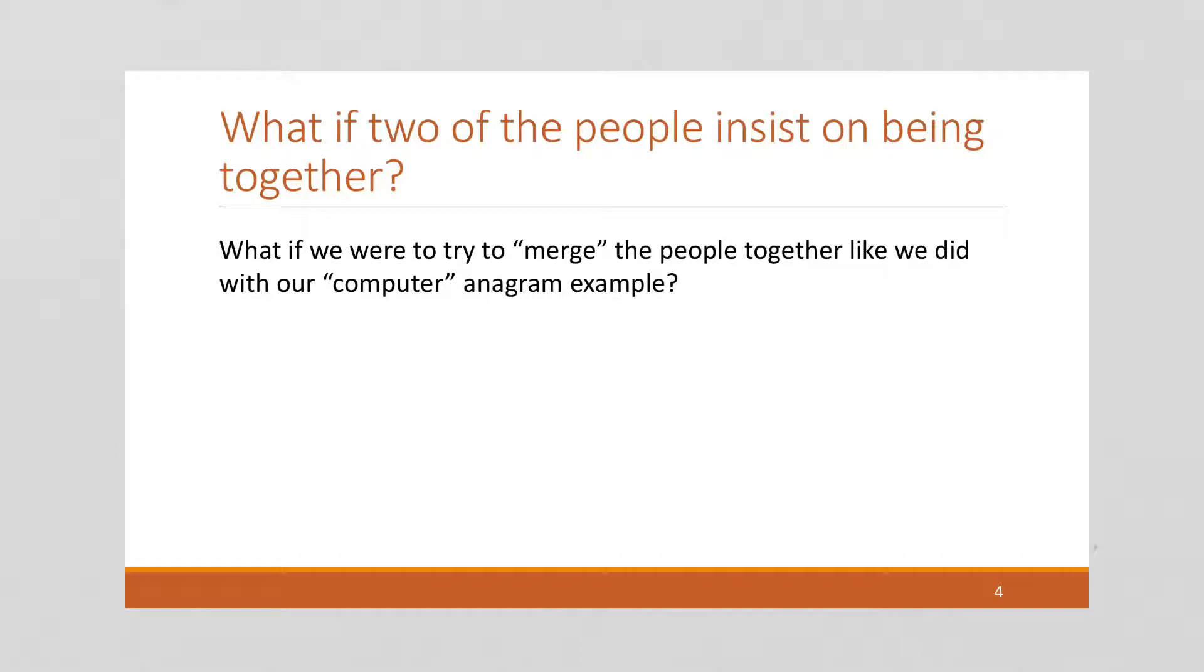You might have remembered when we were doing permutations, and we were doing an anagram example where we were keeping the C and the O together. We merged it together into a single letter. So let's see what happens. Why doesn't that work? Because if you try that, you're going to find a different example, you're going to get a different number.